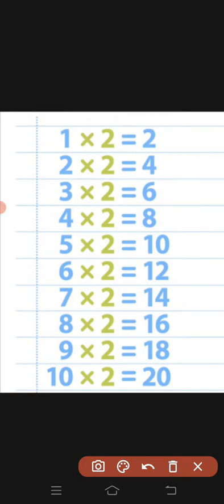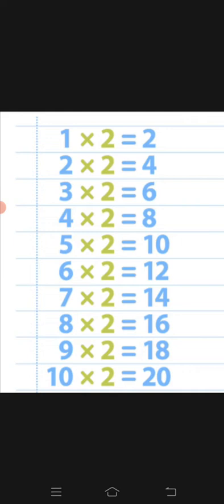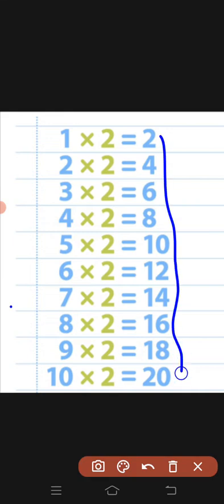Seven twos are fourteen, eight twos are sixteen, nine twos are eighteen, ten twos are twenty. You have to memorize it like a poem so you can study easily. Look at the answers in the table of two, these are even numbers right? Two, four, six, eight, ten, twelve, fourteen, sixteen, eighteen, and twenty.